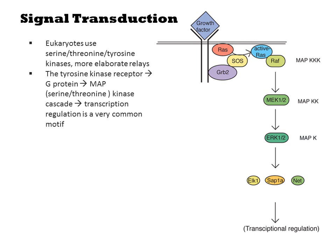Ultimately, these cascades activate transcription factors. One thing to be aware of when reading literature about these proteins is that MAP kinase is not one specific protein — it refers to a homologous class of proteins that are functionally related but play disparate roles in the cell.